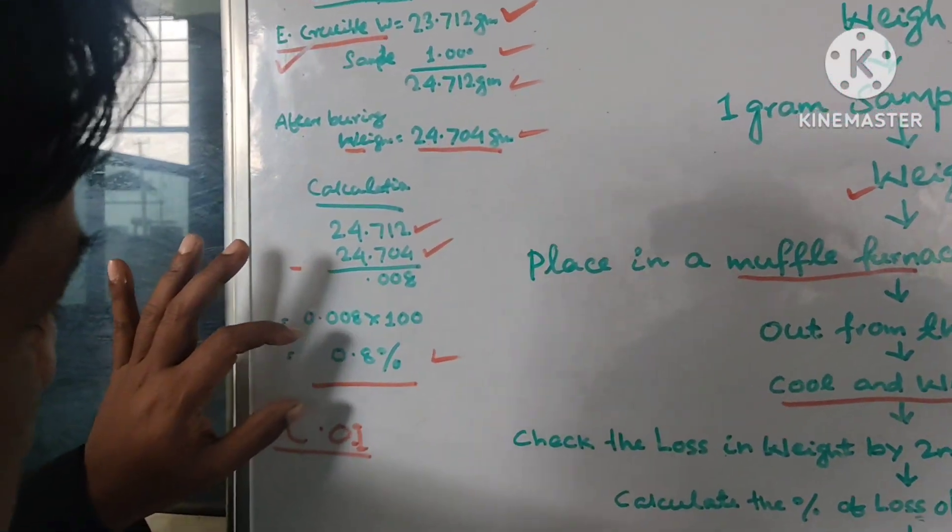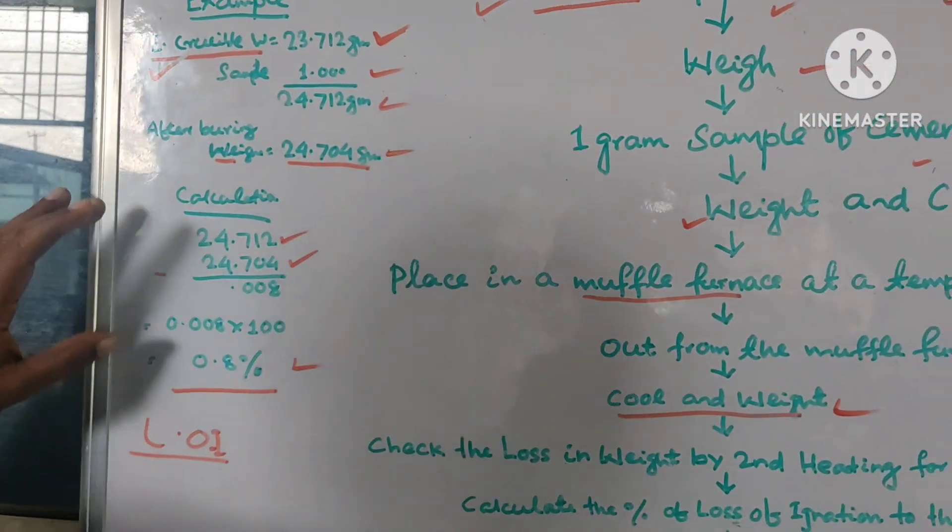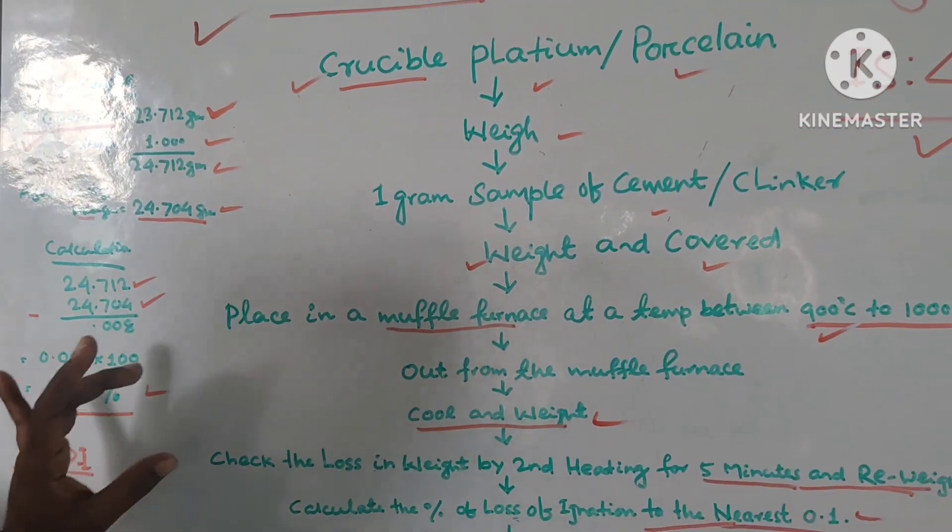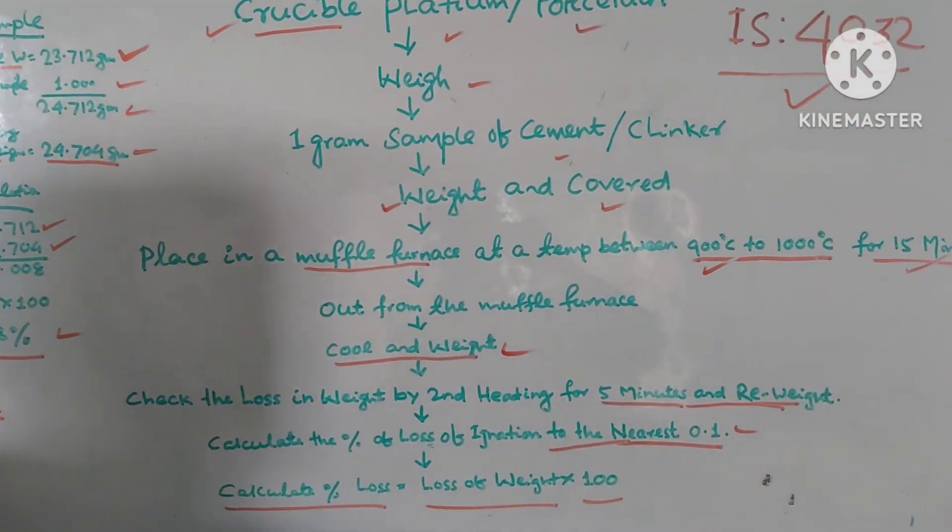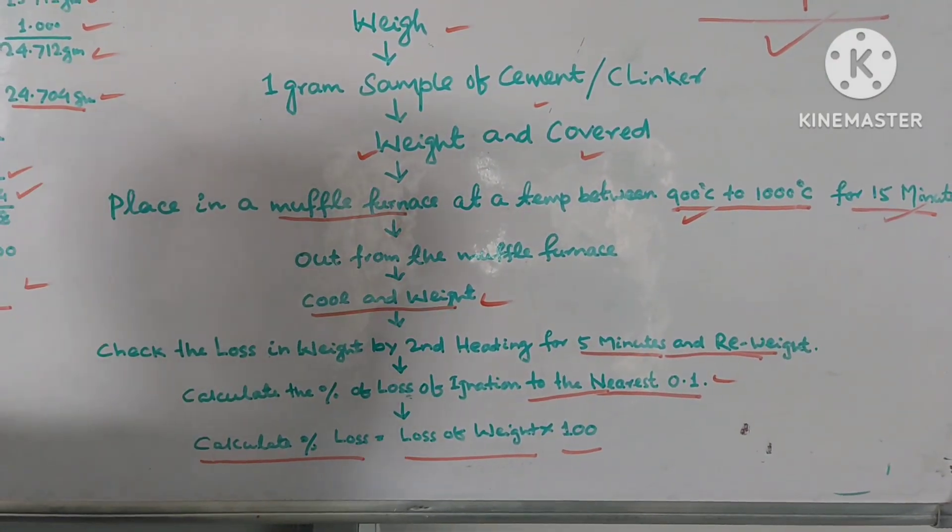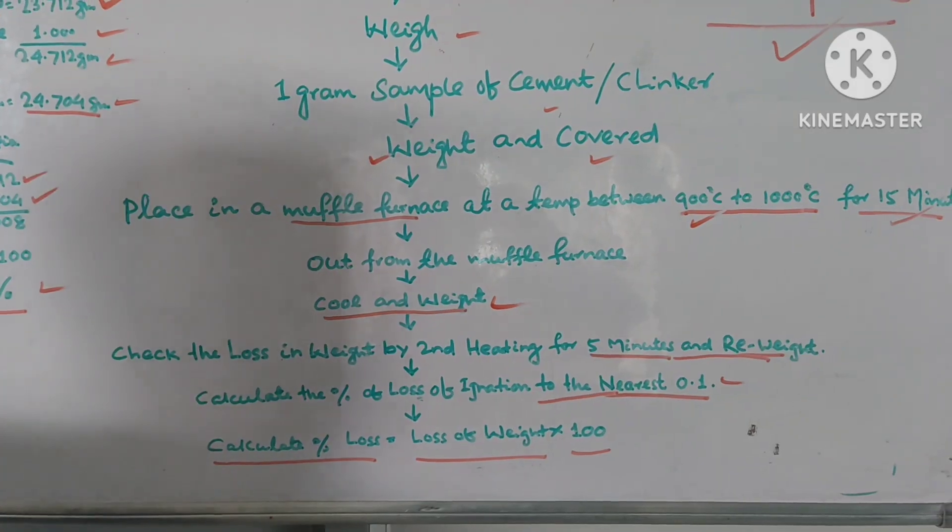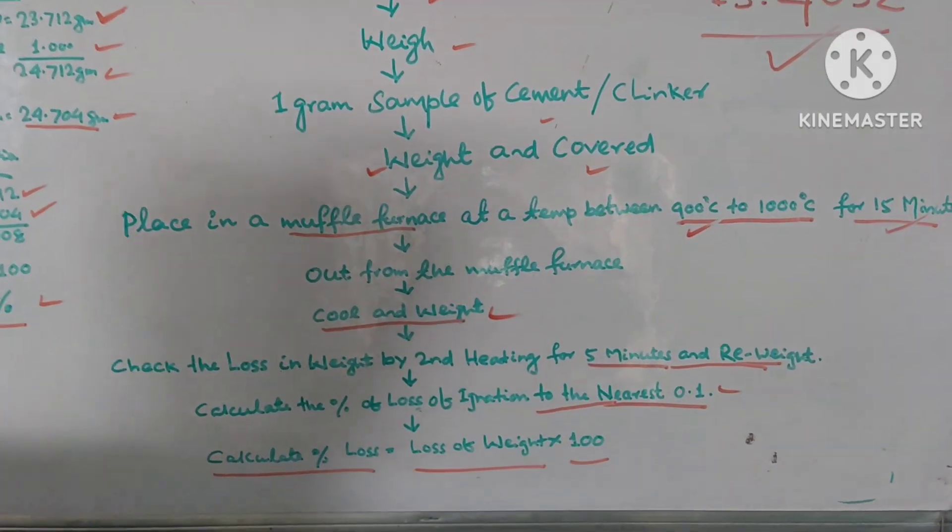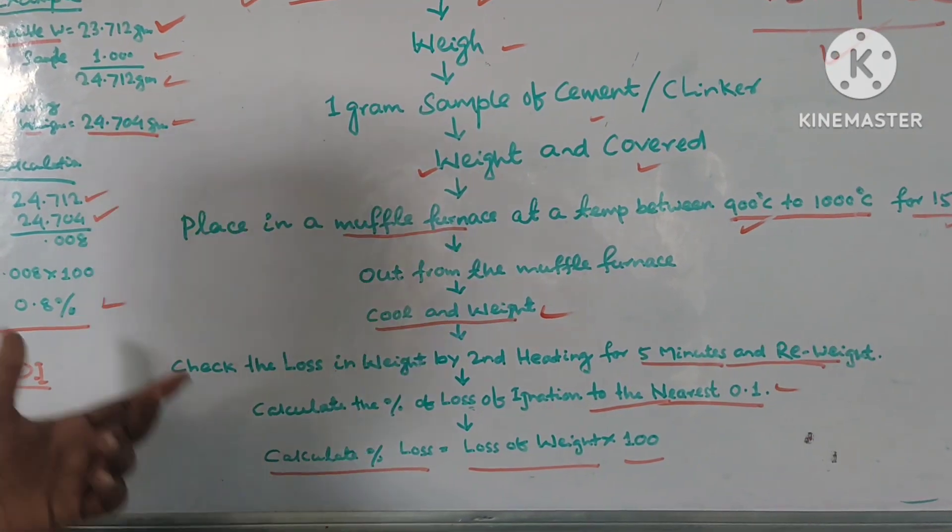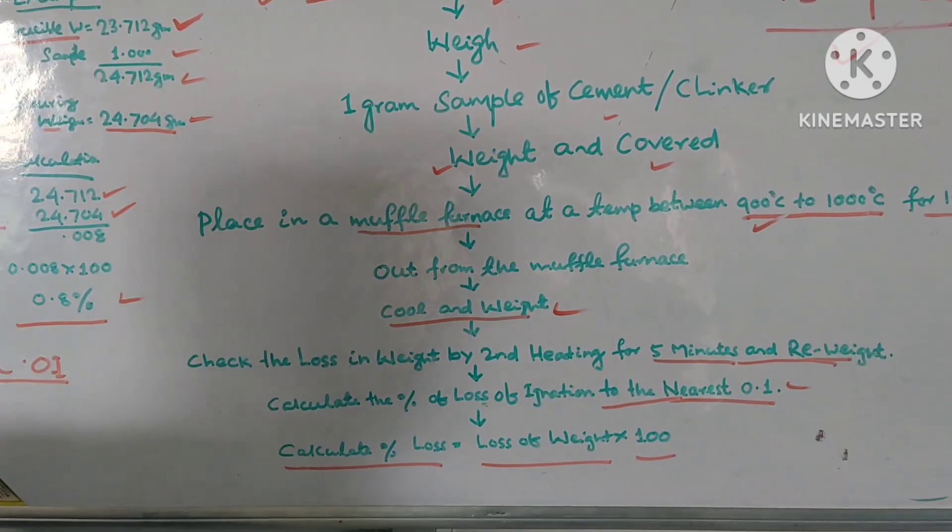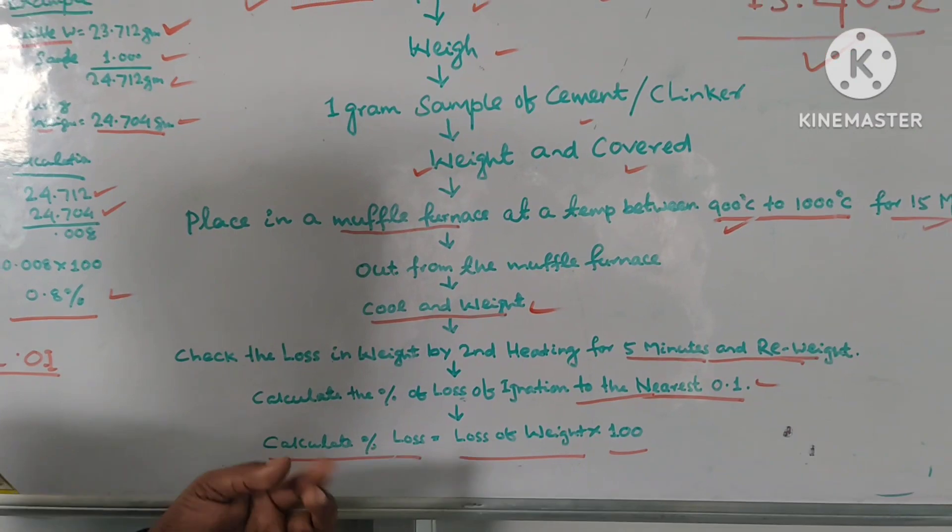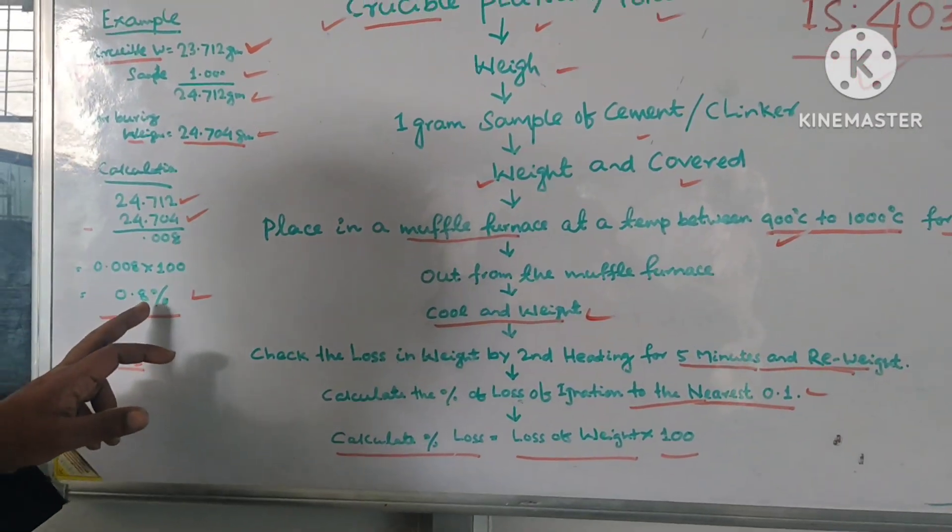This is the loss of ignition. So just shortly, take an example for all of you for better understanding. This is the simple method. Take one gram sample crucible, place in furnace for 15 minutes with your temperature 900 degrees centigrade to 1000 centigrade. And when complete your 15 minutes out from the crucible, cool it and weigh it. That is the loss. And for better quality understanding and knowing whether further is increasing of the LOI, we have to recheck it. Also five minutes beyond, we have to recheck it. And calculate the percentage of 0.1. And calculation method is loss of weight into 100. This is the loss of weight into 100, 0.8 percent.